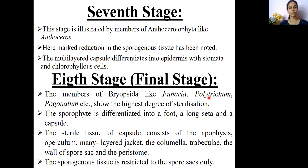This eighth stage is also called the final stage because it represents the highest degree of sterilization among the bryophytic plants. Here the sporophyte is differentiated into a foot, a long seta, and a capsule, with a large number of sterile tissues present such as apophysis, operculum, jacket layers, columella, trabeculae, and peristome teeth, etc.